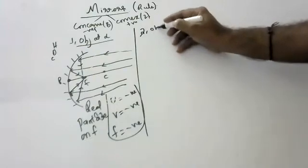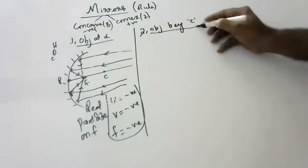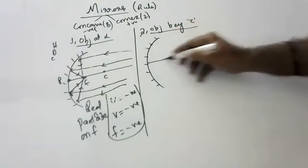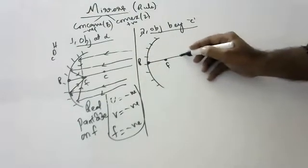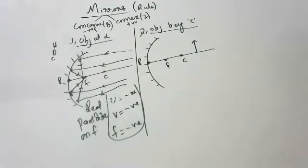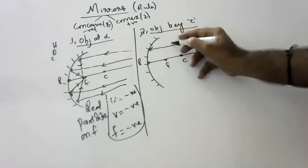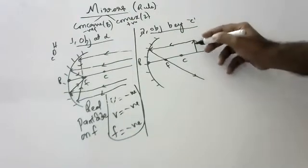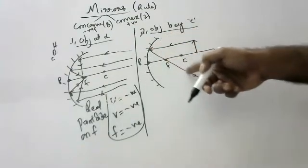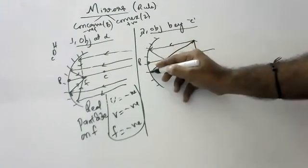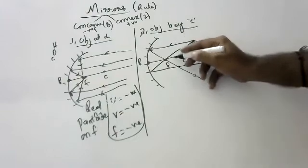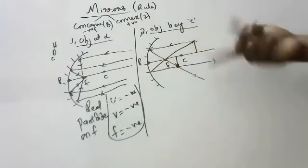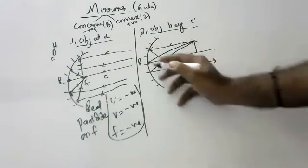Second case: object is beyond the center of curvature. We bring the object beyond C. One ray goes parallel to the principal axis and goes through focus. Another ray goes through focus and comes back parallel. Wherever they meet, that is where the image forms.